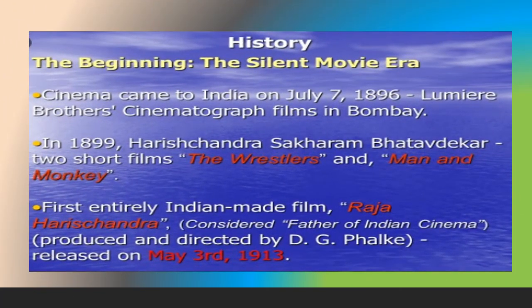Let's see the history of Indian cinema. In the beginning, the silent movie era: cinema came to India on July 7th, 1896, when Lumiere Brothers showed cinematograph films in Mumbai. In 1899, Harishchandra Shaka Ram produced two short films — The Wrestlers and Man and Monkey. The first entirely Indian-made film, Raja Harishchandra, considered the father of Indian cinema, was produced and directed by D.G. Phalke and released on May 3rd, 1913.